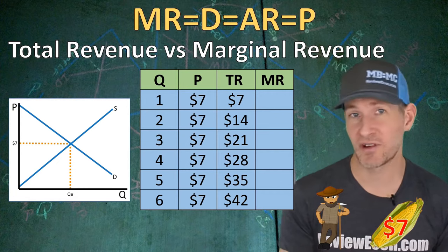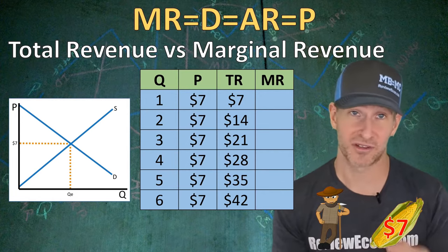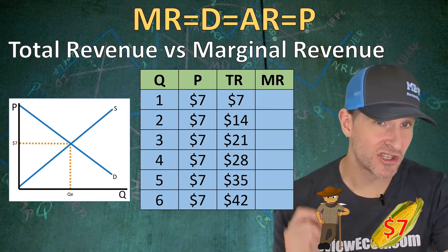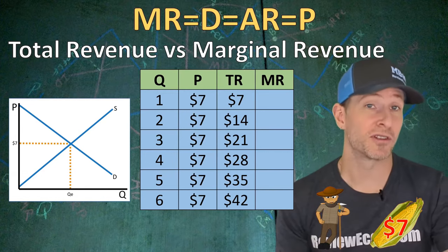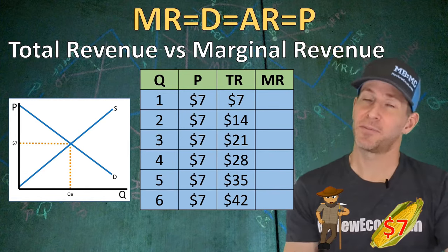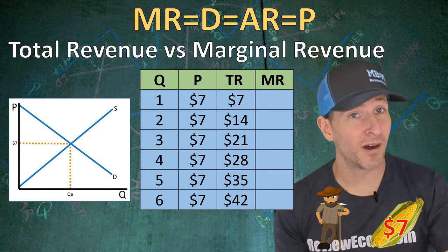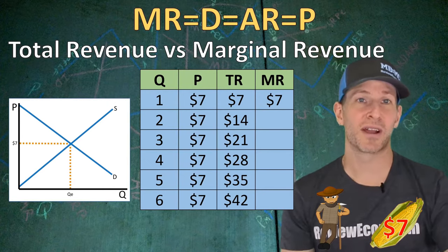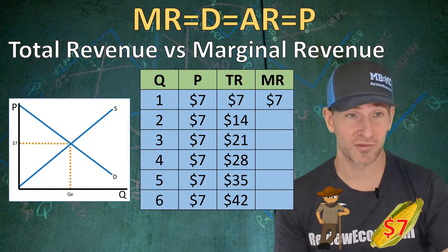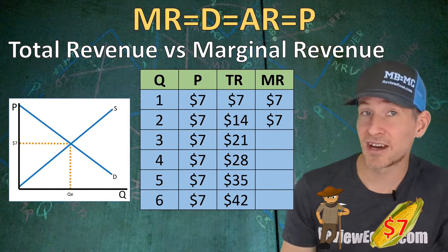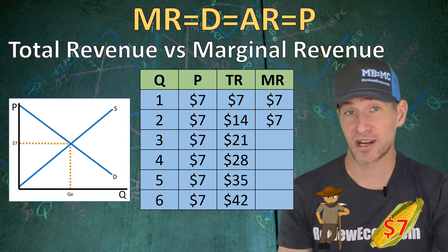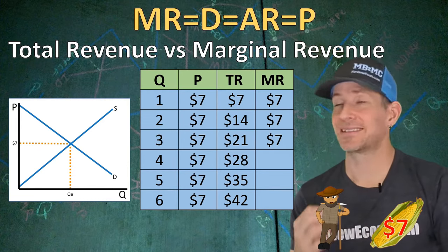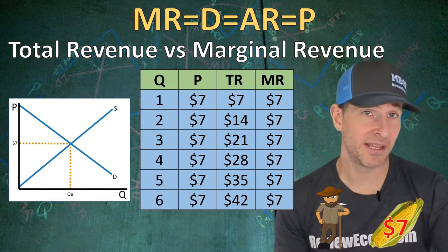In order to find profit maximization, we must find our marginal revenue and our marginal cost. Marginal revenue is the change in total revenue — essentially the revenue brought in for producing one more unit of output. At zero units of output, total revenue is zero, so at one unit the $7 of total revenue is also $7 of marginal revenue. At two units, total revenue increases by $7, so marginal revenue is again $7. This continues: at every unit of output, the marginal revenue equals the $7 price.